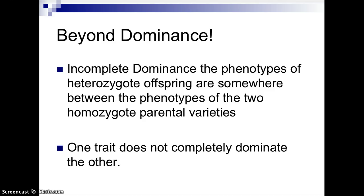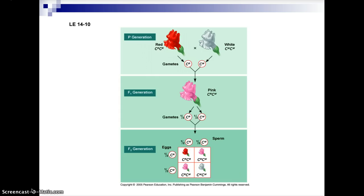An example can be seen in snapdragons or four o'clock flowers. Here you can see the gene for coloration represented by capital C. You have R-R for a red flower and W-W for the white flower. When you cross them, the gametes for the red flower would be C-R, and C-W for the white flower. The F1 generation would result in all pink flowers because they're heterozygous: C-R, C-W.